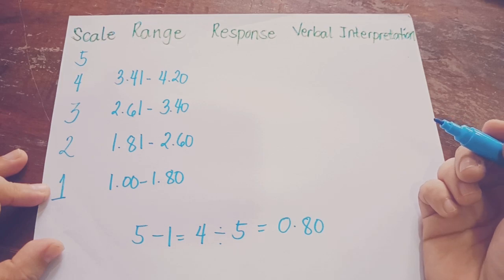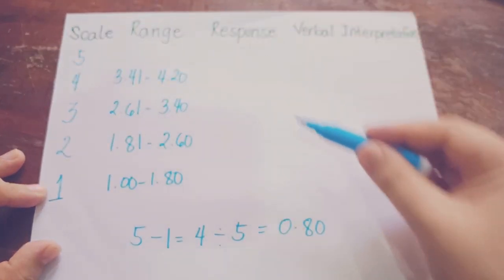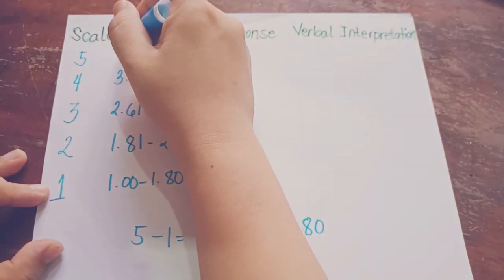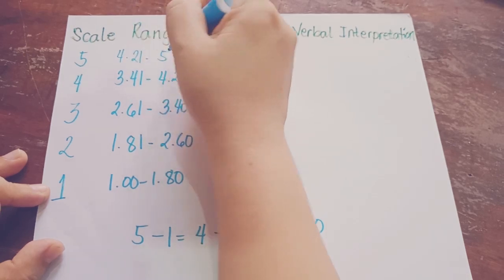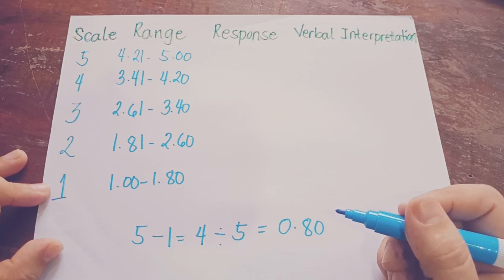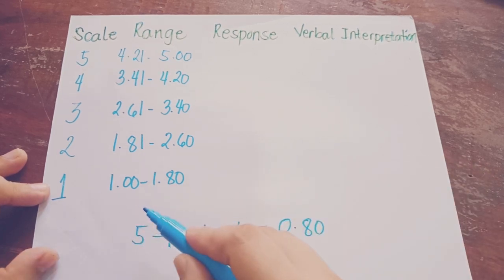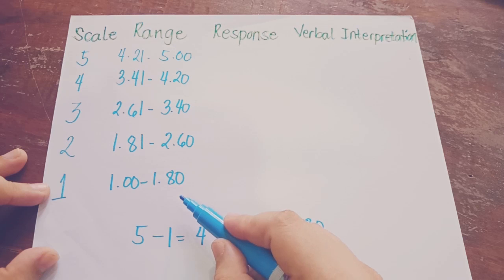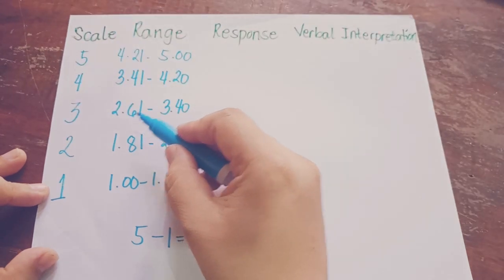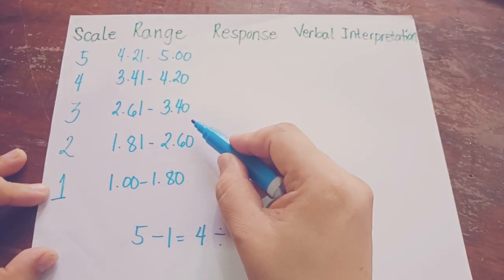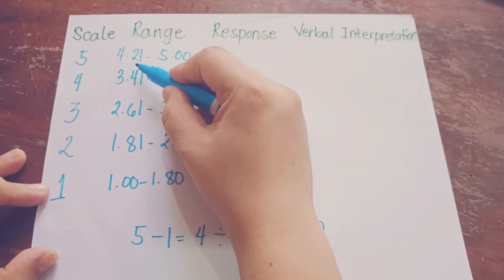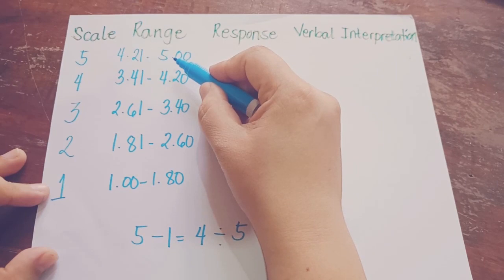For the last scale, the highest point scale of 5, add 0.80 to 4.20, giving 4.21 to 5. To recap: scale 1 is 1 to 1.80; scale 2 is 1.81 to 2.60; scale 3 is 2.61 to 3.40; scale 4 is 3.41 to 4.20; and scale 5 is 4.21 to 5.